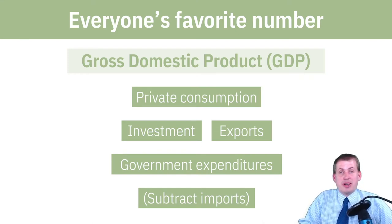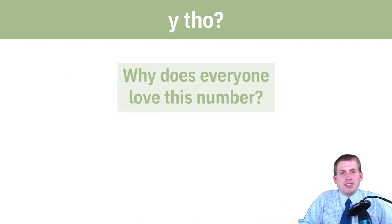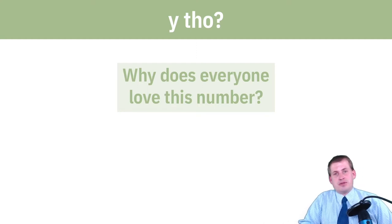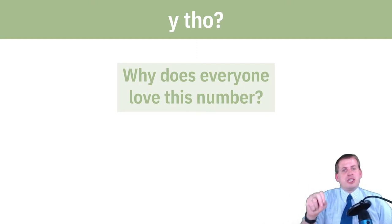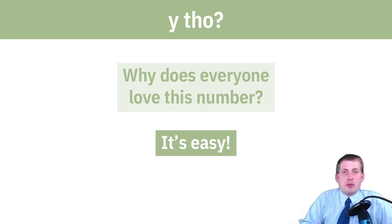We don't care about actually calculating this number, but what's interesting is that it's just four simple things lumped together. Why did we settle on this? Why does everybody love this number? As you learned in the podcast, it's mostly not because it's the most accurate measure of the economy's pulse — it's just because it's easy to measure. You can calculate these numbers and figure out what's happening, but it's not necessarily the most accurate or best way to measure the health of a society.